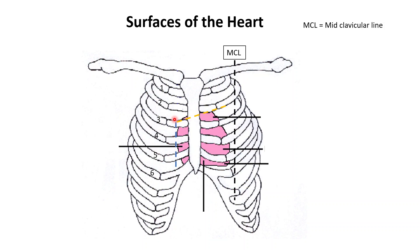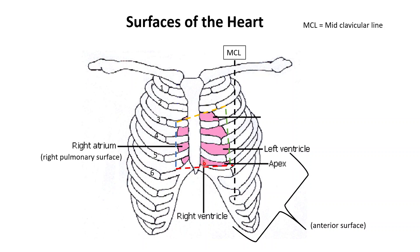Now let's define the borders of the heart: the superior border, the right border, the inferior border, and the left border. On the right side, the right border extends from the third costal cartilage to the sixth costal cartilage — this is the right atrium making up the right pulmonary surface. The anterior surface is made up of the right ventricle, left ventricle, and the apex. On top in the left second intercostal space we have the left auricle.